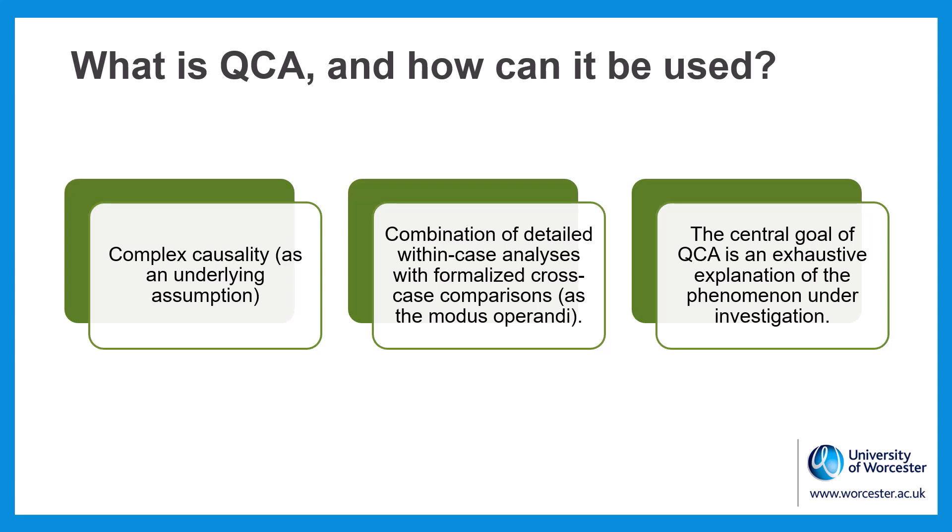An underlying assumption of QCA is that social phenomena involve complex causality. Complex causality means that, first, causal factors combine with each other to lead to the occurrence of an event or phenomenon. Second, different combinations of causal factors can lead to the occurrence of a given type of event or phenomenon. And finally, causal factors can have opposing effects depending on the combinations.